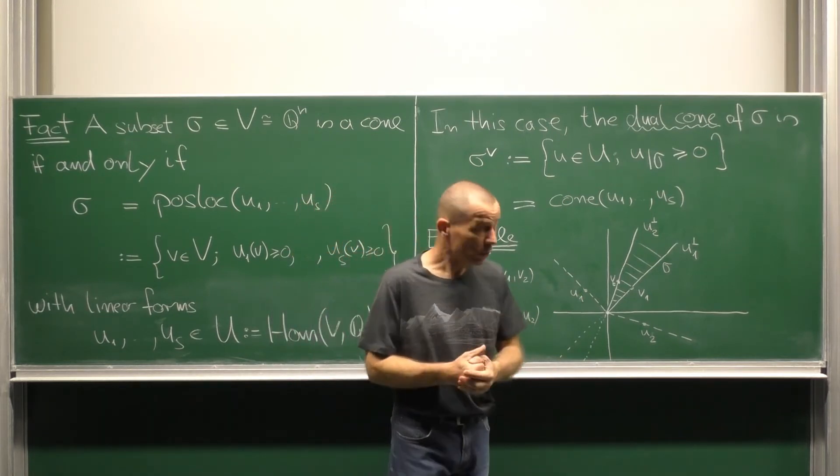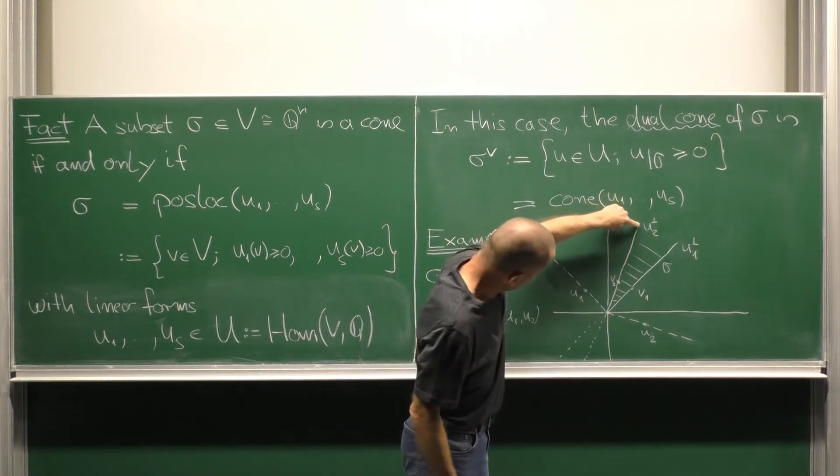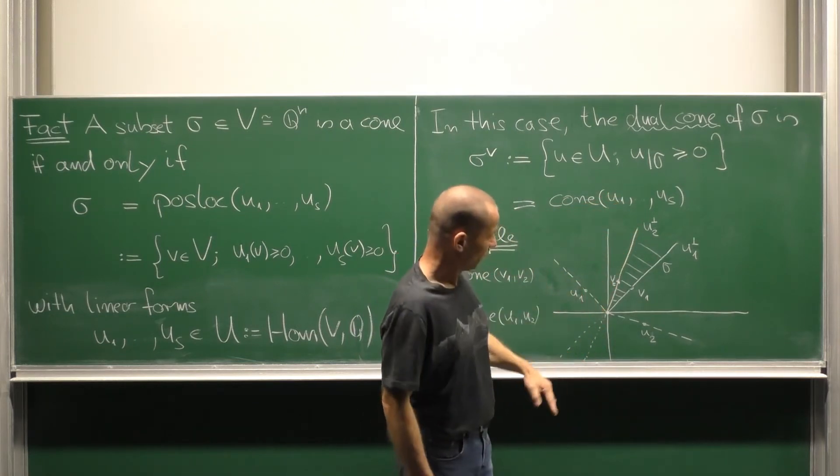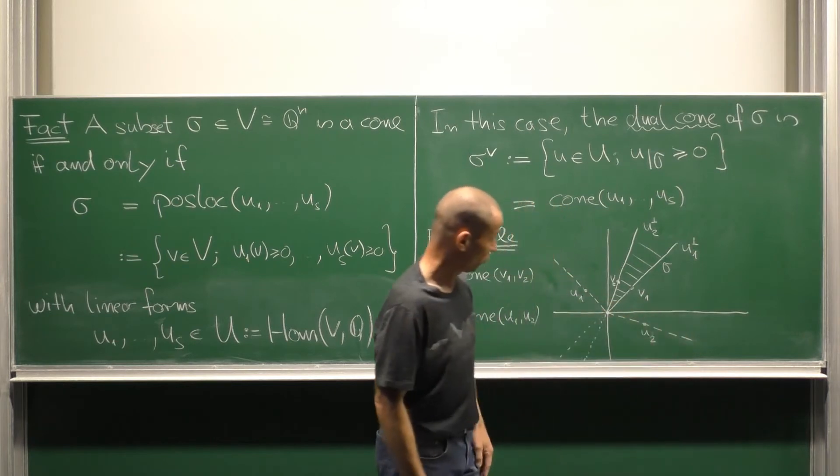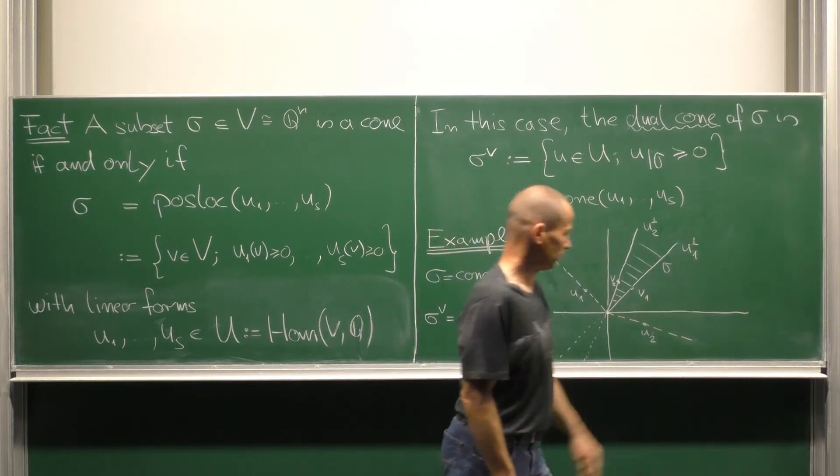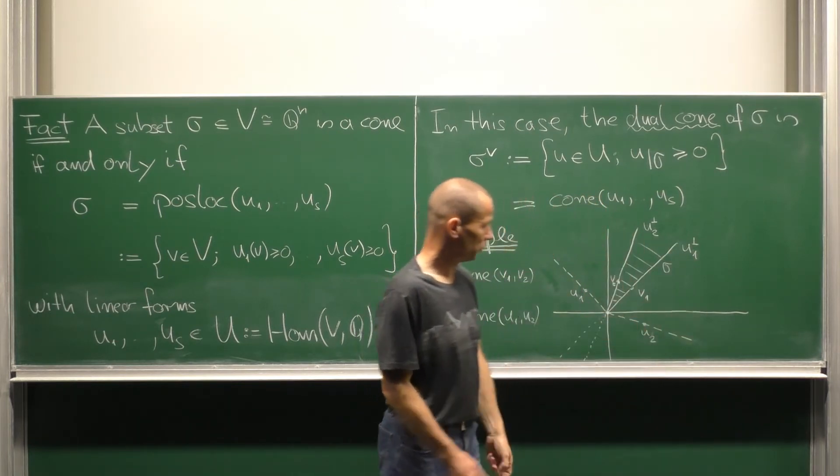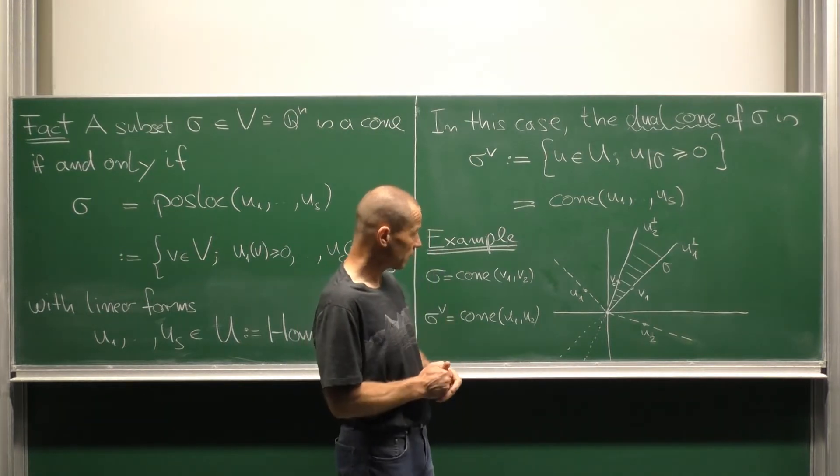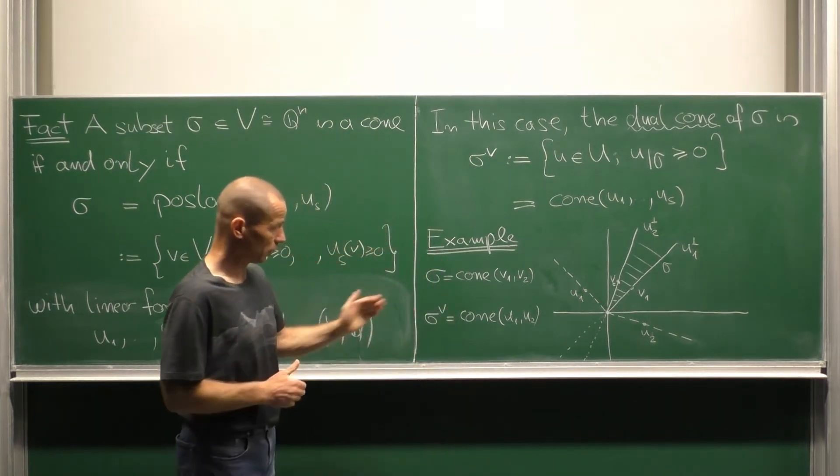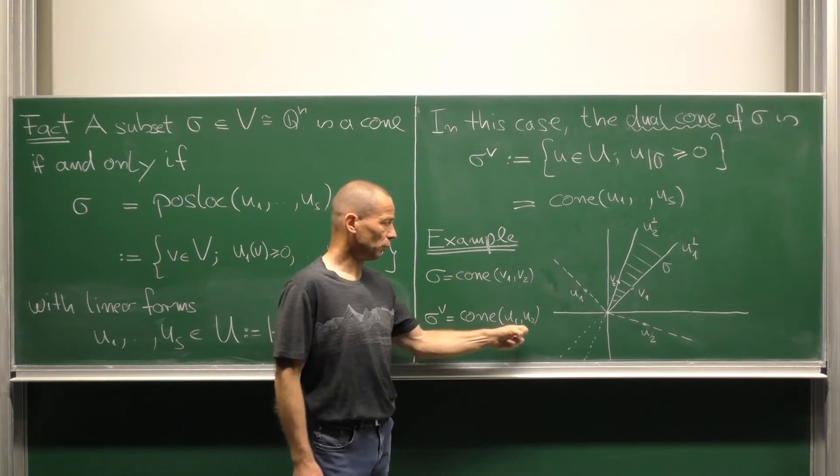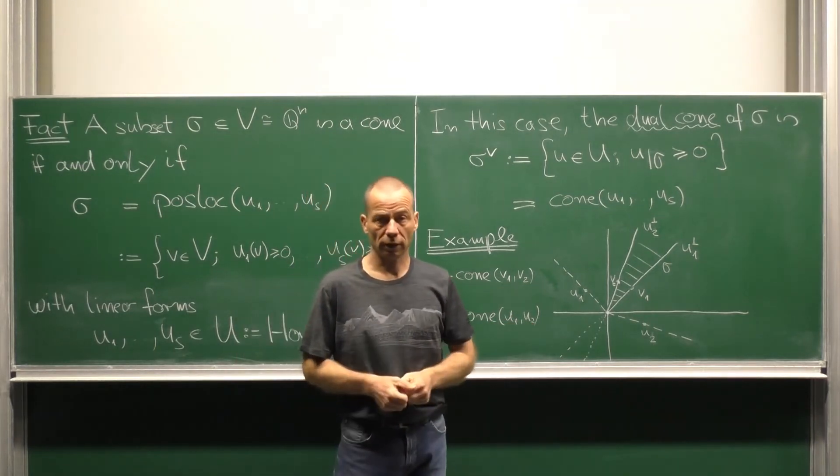Similar for the other one, the linear form has to vanish on that line, so it lies on the ray perpendicular to that and somewhere in this area here as well. This is u2. And then the statement says that the dual cone is generated by the two linear forms u1 and u2.